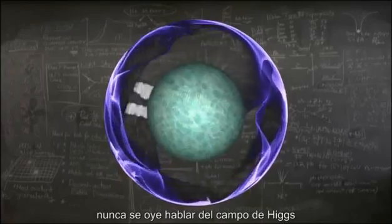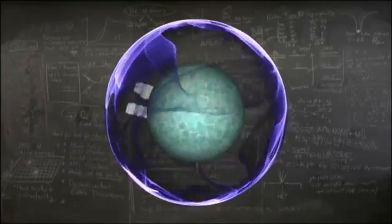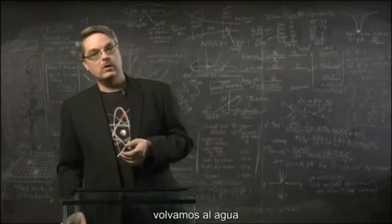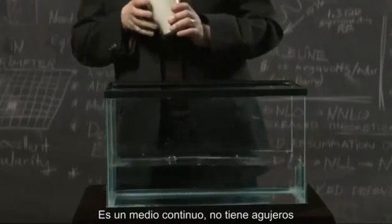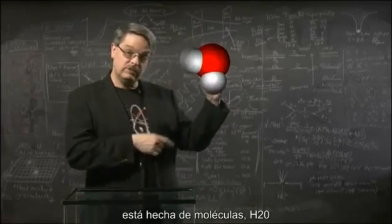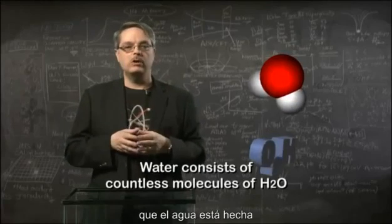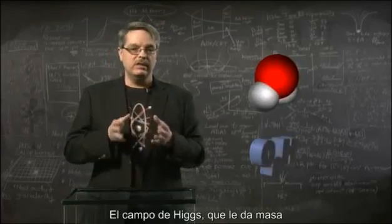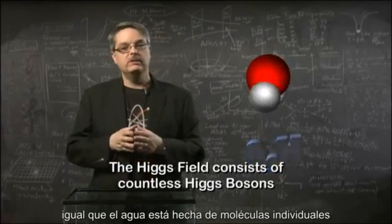Now, in the press you don't hear about the Higgs field, but rather the Higgs boson. How are these two things related? The Higgs boson is the smallest bit of the Higgs field. To understand how that works, we should again return to water. Everyone knows what water is — if you're immersed in it, you know that water is everywhere. It's a continuous medium and there are no holes in it. We also know that water is made of molecules, specifically H2O. If you hold these two ideas in your head, with the realization that water consists of countless individual molecules, you can begin to appreciate the Higgs boson. The Higgs field that gives subatomic particles their mass is made of countless individual Higgs bosons, just like water is made of individual molecules.